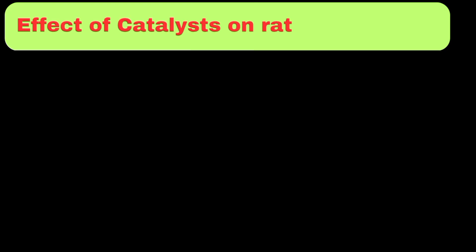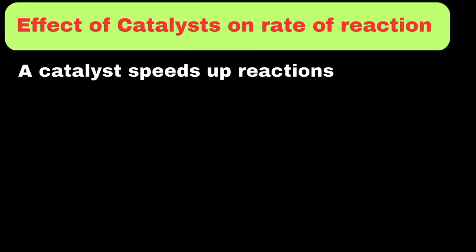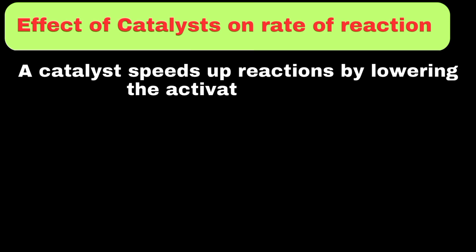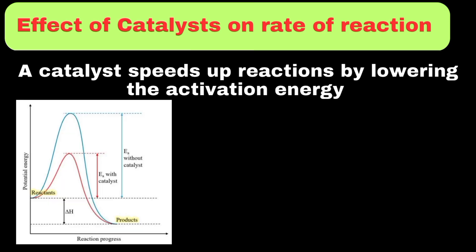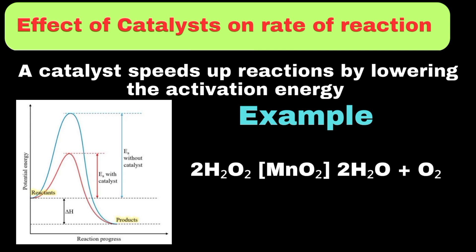A catalyst speeds up a reaction by lowering the activation energy without being consumed. So the presence of a catalyst helps to increase the rate of a chemical reaction. For example, manganese dioxide speeds up the decomposition of hydrogen peroxide.